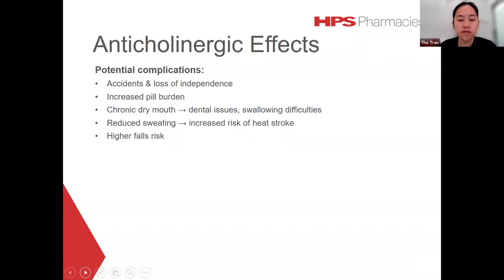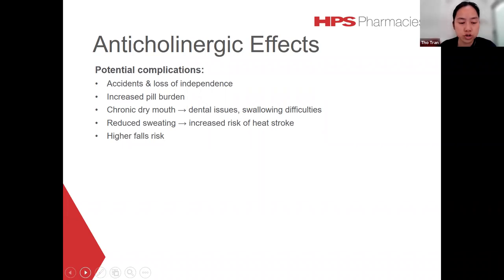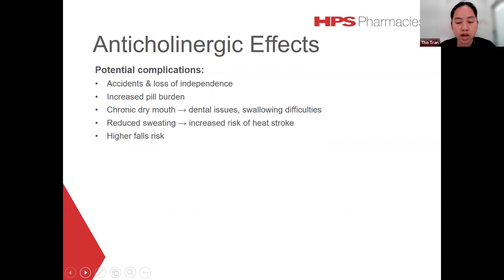Anticholinergic adverse effects range in severity from subtle to severe, which may make identification difficult. Additionally, some patients may mistake anticholinergic effects for a normal sign of ageing or progression of their underlying disease. However, it is important to identify the issue, as it can lead to further complications. These include loss of independence, accidents related to blurred vision, dizziness or memory issues, increased pill burden when another medication is used to treat side effects, chronic dry mouth contributing to tooth decay, periodontal disease, oral candidiasis, difficulty chewing and swallowing, reduced sweating increasing risk of heat stroke, and a higher risk of falls in elderly populations.